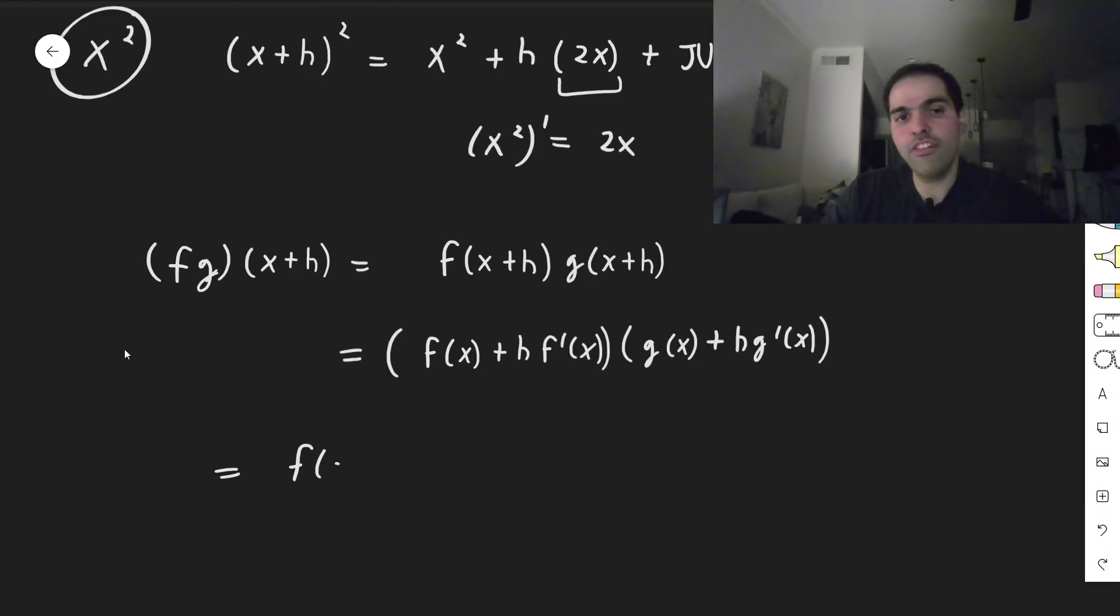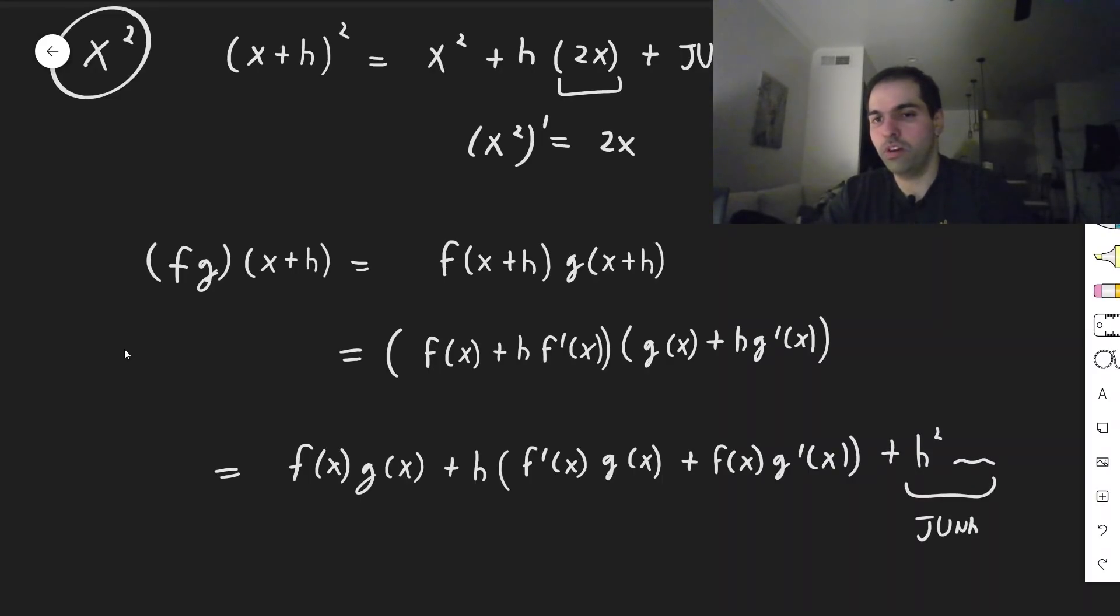So this becomes f of x times g of x, and then plus h times f prime of x g of x, and then plus f of x g prime of x. And then some terms with h squared, but this is just junk. It's just small junk.